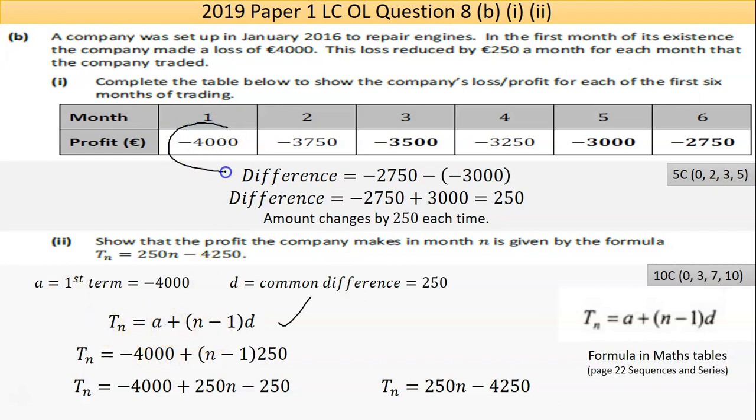I've taken the formula and written it to my page. I've identified the three things that I need to get this formula. So a is the first term, so it's the minus 4,000. n is the number of months, and that can stay general. And the d is the difference, so it's 250 each time. So I fit in the different parts, then simplify by multiplying the 250 by both of these terms in the bracket. And then the last thing you do is just add the two numbers. And they end up with this expression, that's the expression they asked me to find.